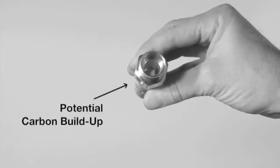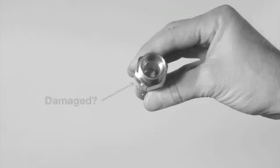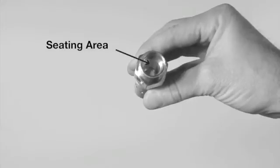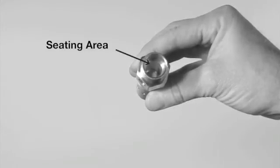If the valve appears only to be dirty with carbon buildup, washing it with a mild soap may be sufficient. If any part appears damaged, or the seating area where the disc seats inside the valve body appears pitted, replace the valve assembly entirely.